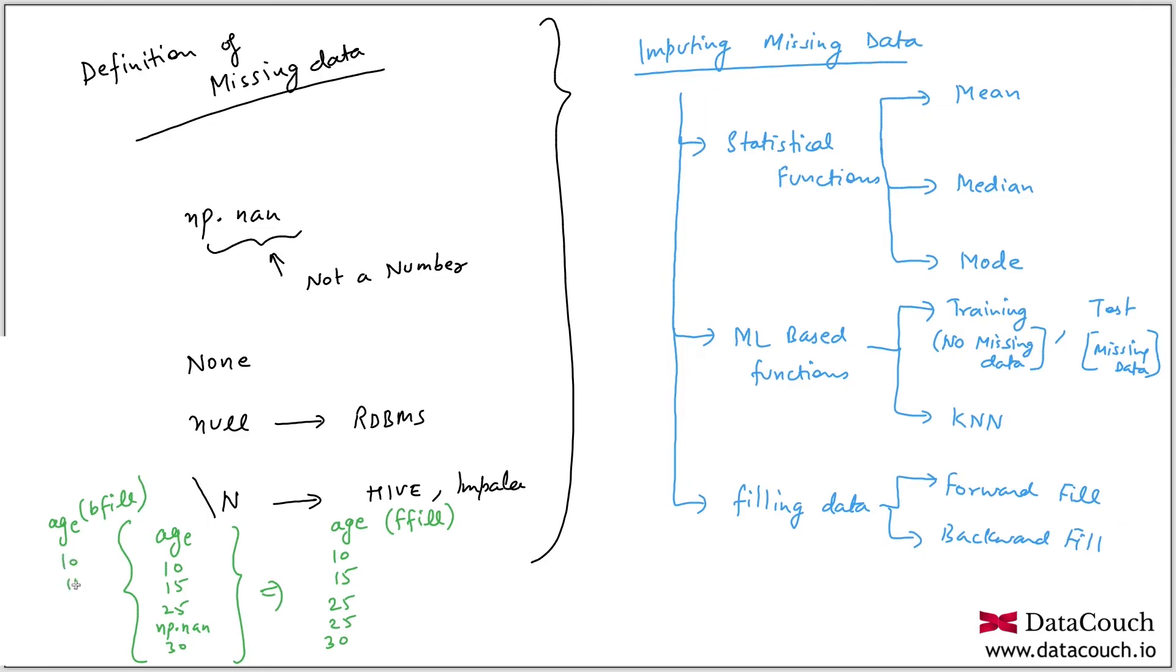And backward fill is 30, so 30 will be here. This is another way - you're doing backfill, you're doing forward fill. These are two different strategies.